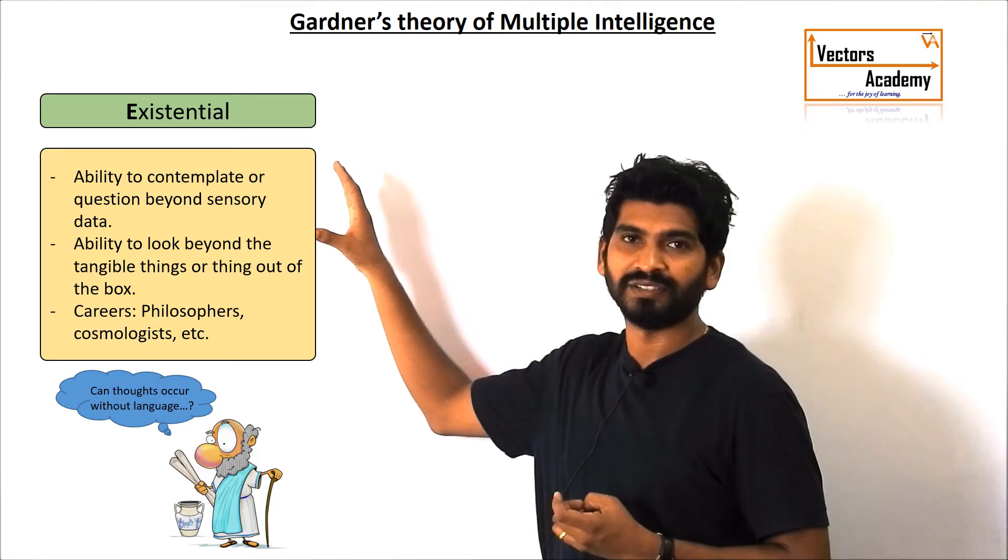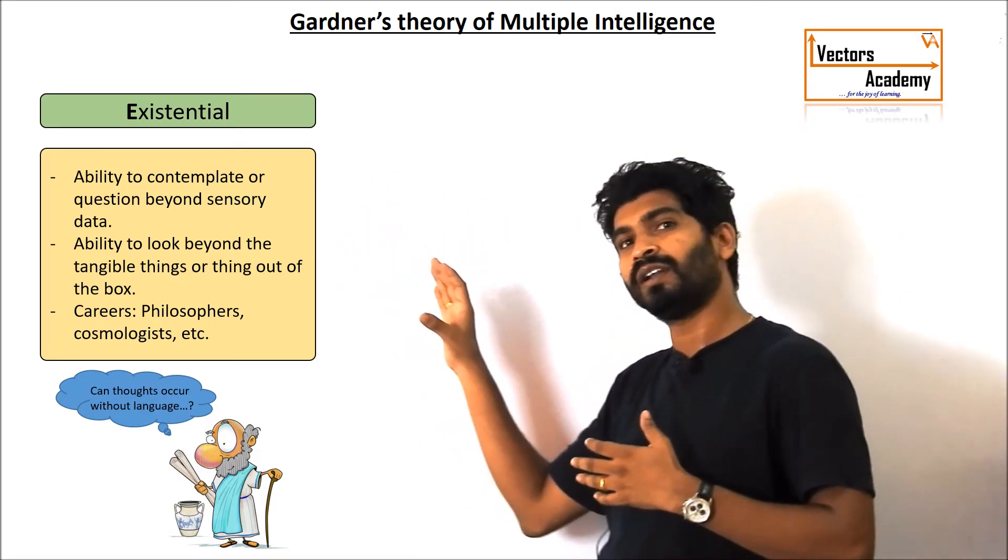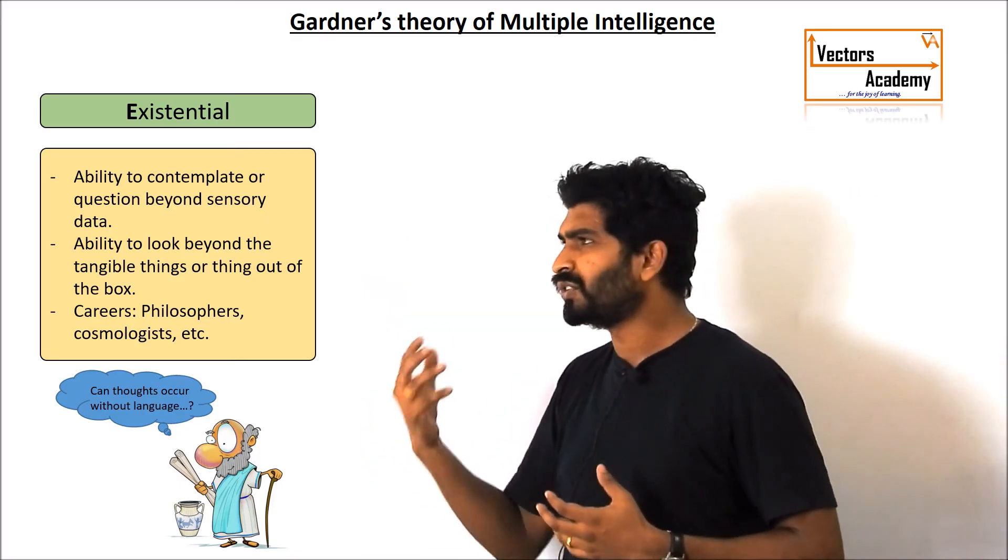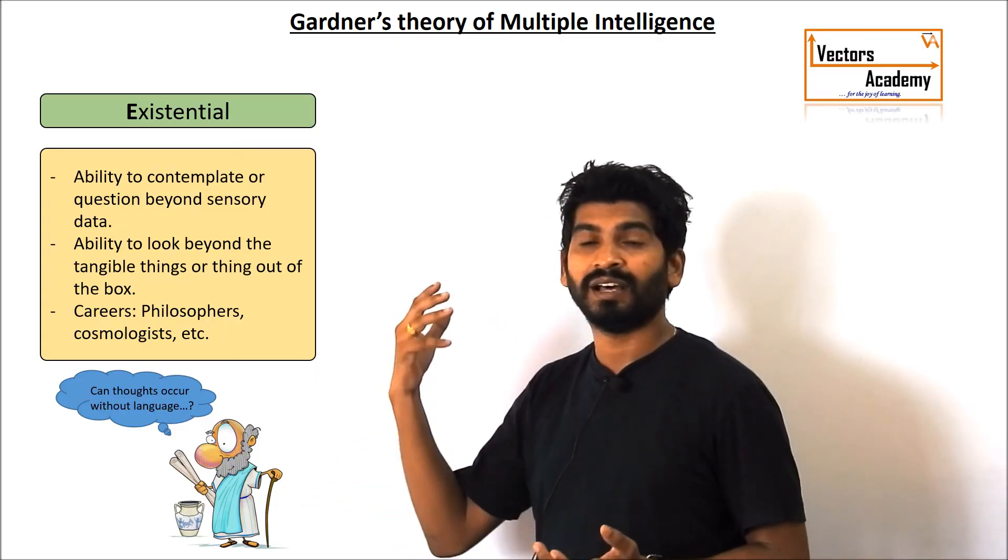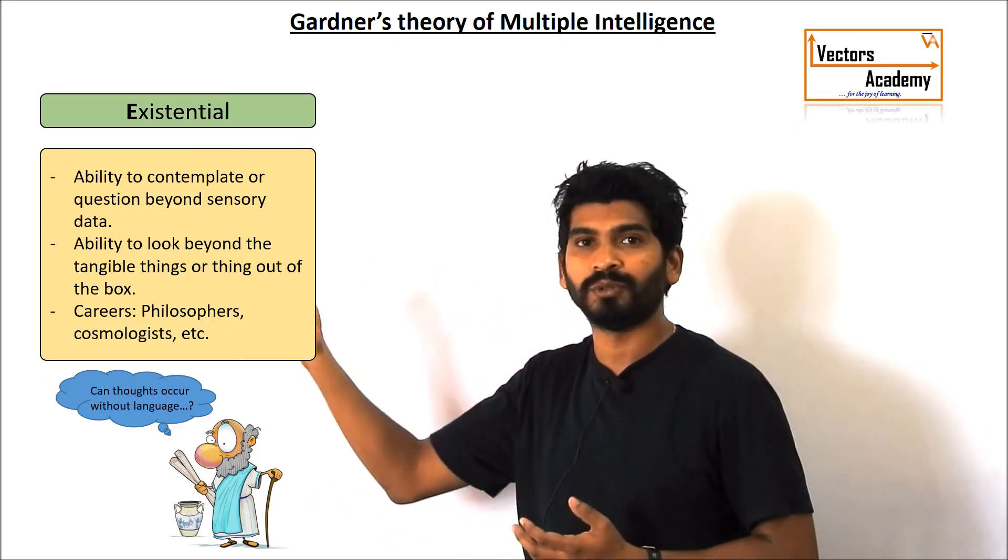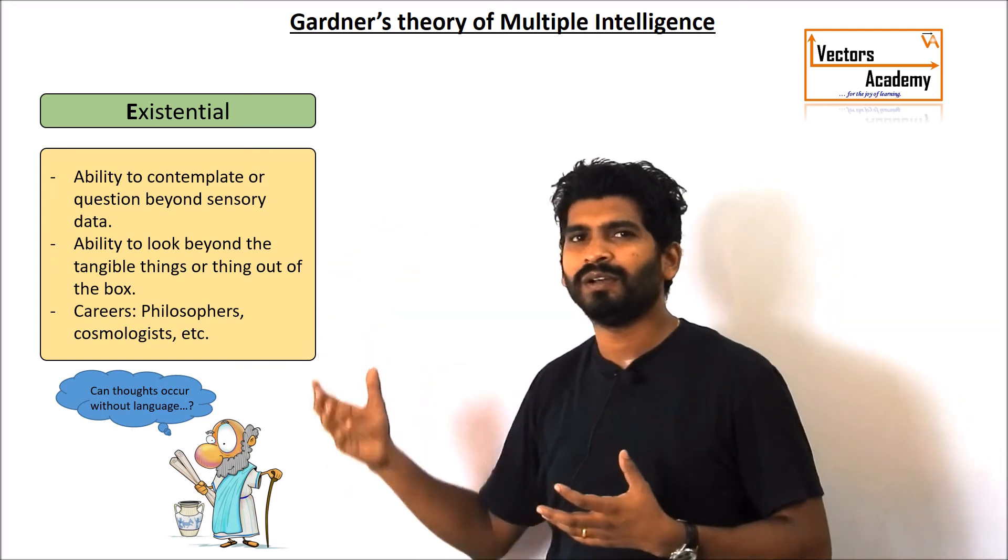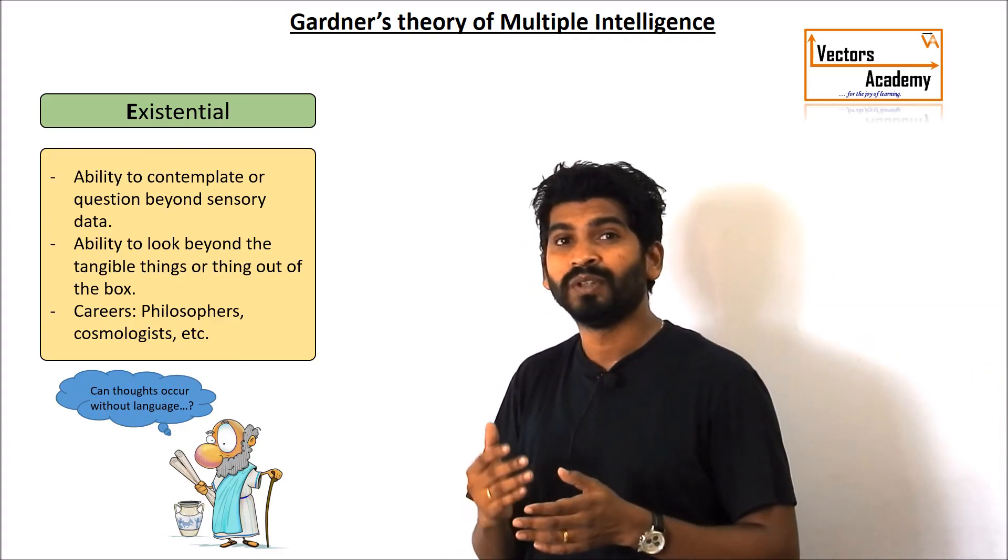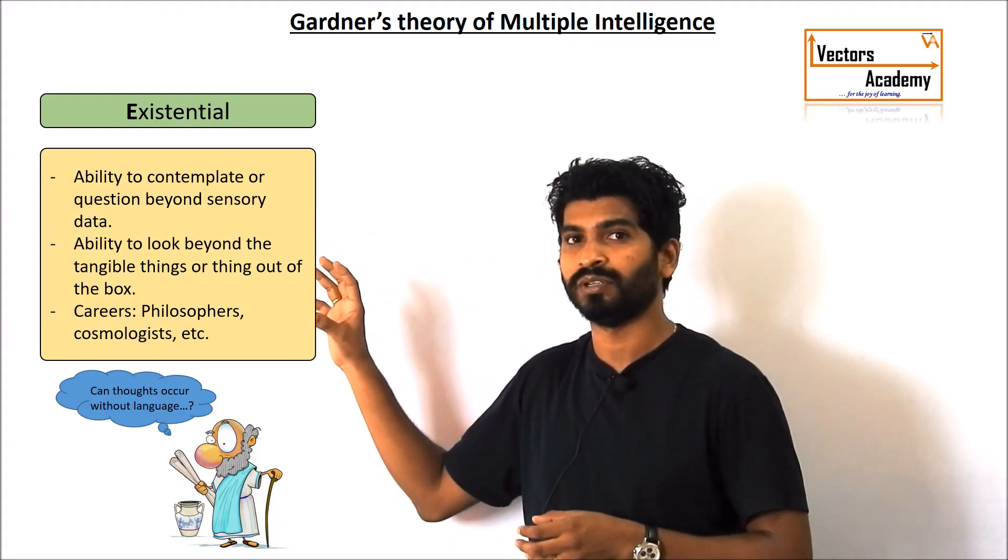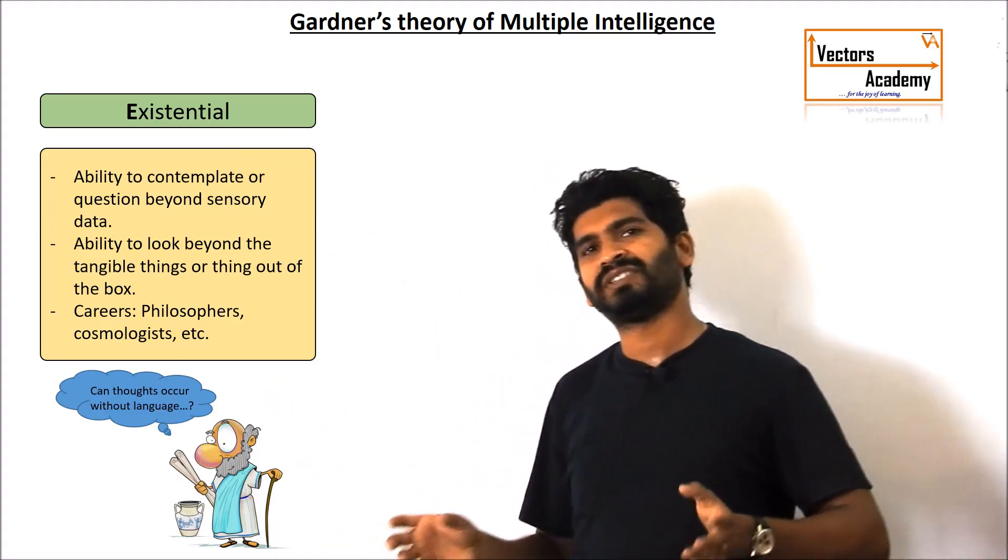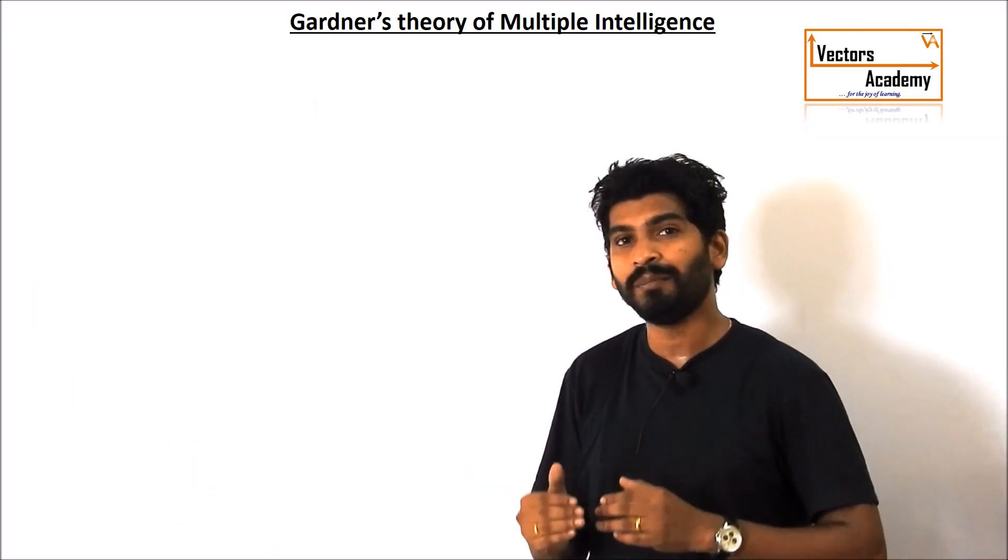And the last comes the existential intelligence. Now this is a special type of intelligence because here these are the people who are able to grasp the things which are not tangible or which might not be visible. Such as the philosophers. The philosophers are always trying to think out of the box. You can see the cosmologists. These are the people who are able to see the things or who are able to visualize or understand the things which do not really exist in the tangible world. So these are the different aspects which Gardner explained that the person might have different type of intelligences.